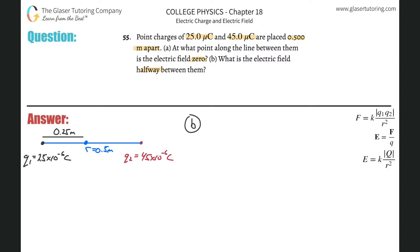And for the red charge, the distance there is also going to be 0.25 meters. Now, what does the electric field look like at this point produced by the positive black charge? Remember, the electric field lines emanate away from a positive charge. Therefore, the electric field vector at this point produced by the black charge is going to be a vector pointing to the right.